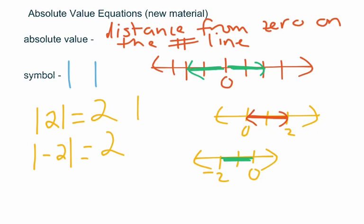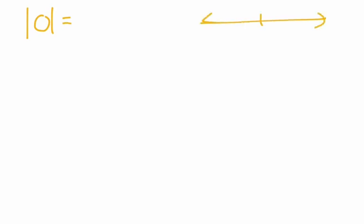You can also do absolute value of decimals. So the absolute value of 1.5 — where would 1.5 be? You have zero, then you have one and you have two, and 1.5 is right in the middle. So 1.5 is one and a half units away from zero on the number line. Now, sometimes students say absolute value is always positive — that's almost true but not quite. The exception: the absolute value of zero. Zero is asking how far away is zero from zero on the number line — you would measure zero. And zero is not a positive number. So saying absolute value is always positive is actually a false statement because of this one exception.